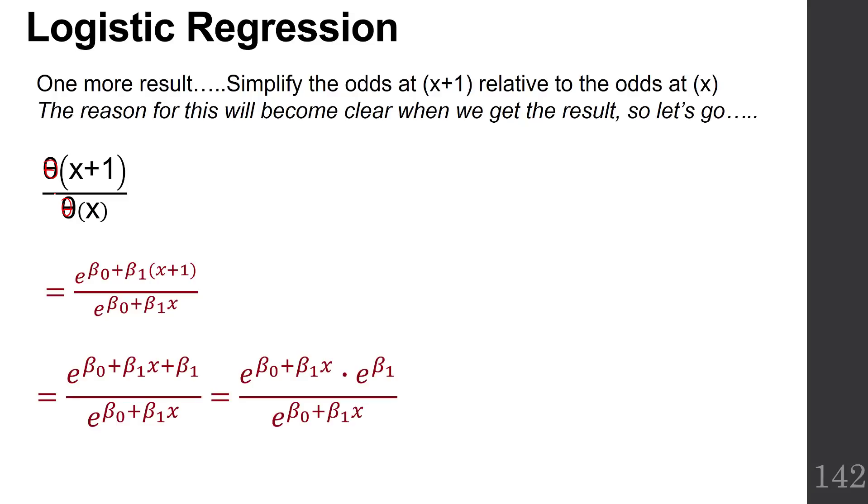If we do a little bit of algebra, we distribute the beta 1 to both of these terms. Then we can just use our rules of exponents to separate out these two. e to the two things plus each other is e to the exponent times e to another exponent.